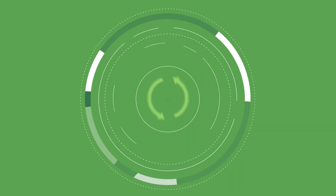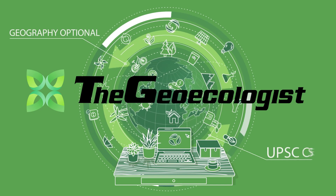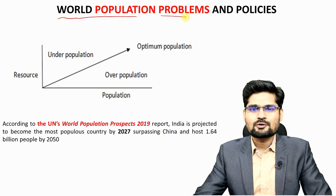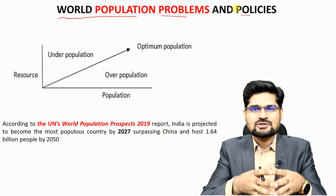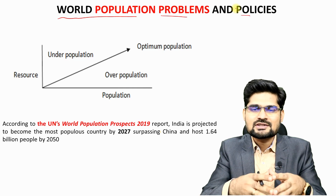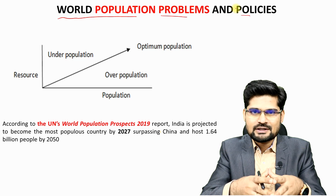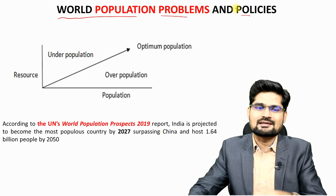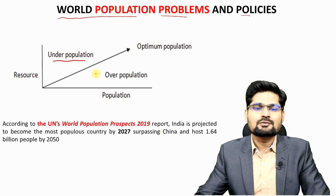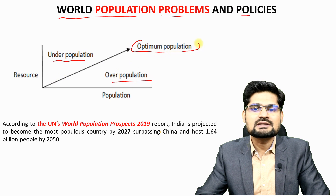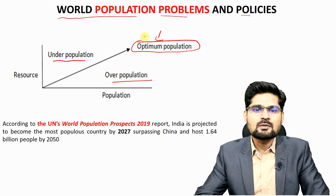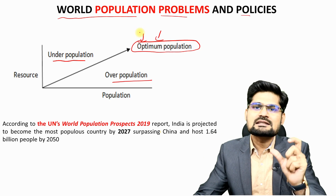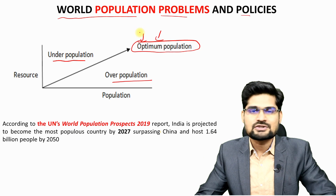In the playlist on population geography, we already have discussions on various concepts like optimum theory, overpopulation, and underpopulation. When we talk about population problems and policies, it relates to these older concepts. Optimum population is the reference mark — underpopulation and overpopulation both present problems, and today we address those challenges.